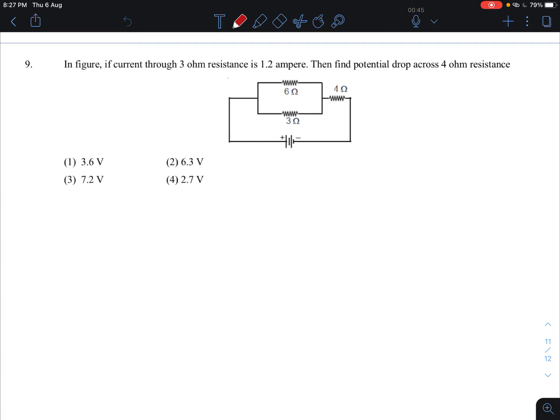What do we do first? The current is given as 1.2 ampere. Okay.